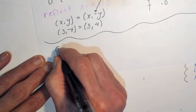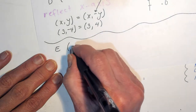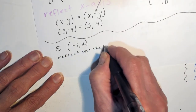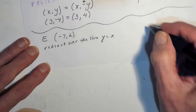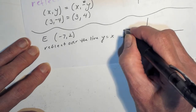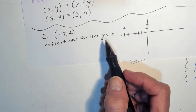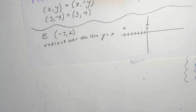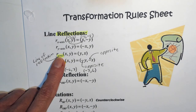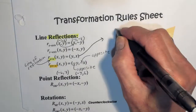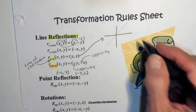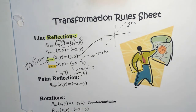We're going to try two more. Point E is at negative 7, 2, and we're going to reflect over the line y equals x. Let's plot our point first — negative 7, 2. Now we need to know where this line is. If you've been watching the videos every day, you already know. The line y equals x is a nice diagonal line that just cuts our coordinate plane in half.